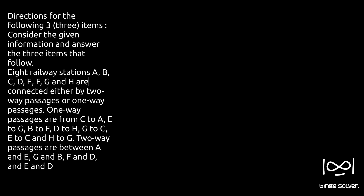Eight railway stations A, B, C, D, E, F, G, and H are connected either by two-way passages or one-way passages. One-way passages are from C to A, E to G, B to F, D to H, G to C, E to C, and H to G. Two-way passages are between A and E, G and B, F and D, and E and D.